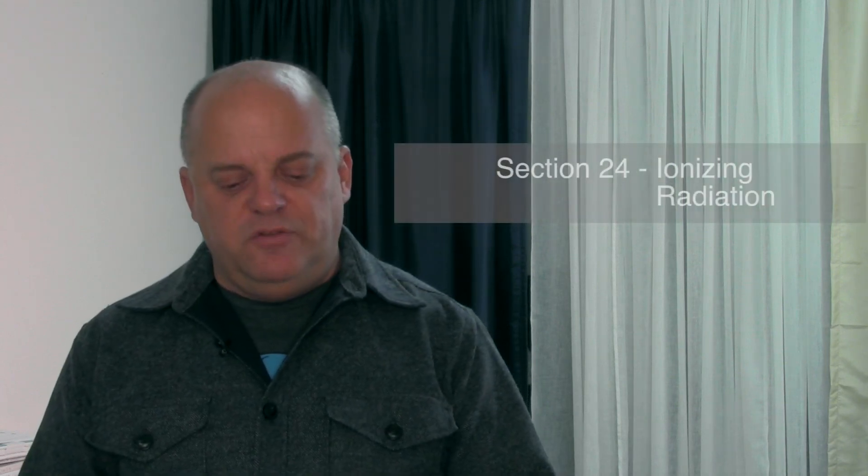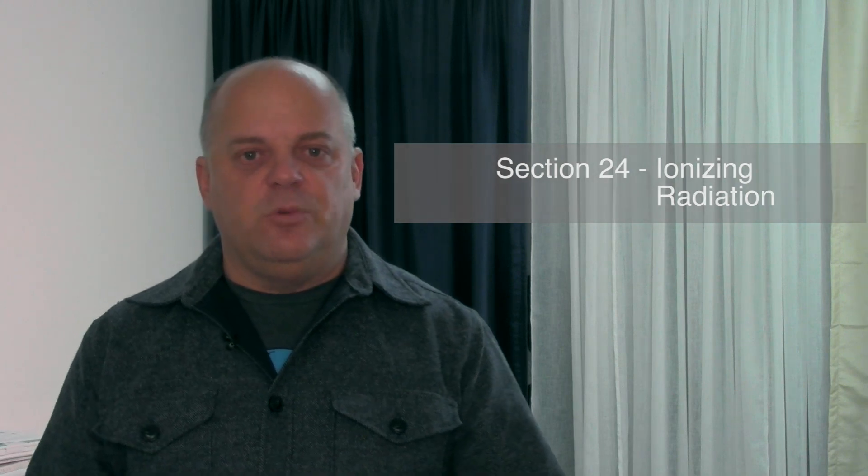Section 23 talks all about the chemicals that are used in the processes, about trying to use less harmful chemicals if possible, and about communicating to the end user what chemicals the equipment is approved for and how to utilize those chemicals. Section 24 is about ionizing radiation — X-rays and radioactive sources and those types — how they're protected and how you communicate their presence, their strength, and protective measures to your end users.